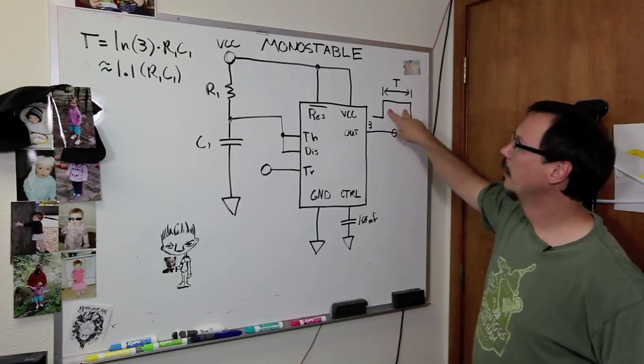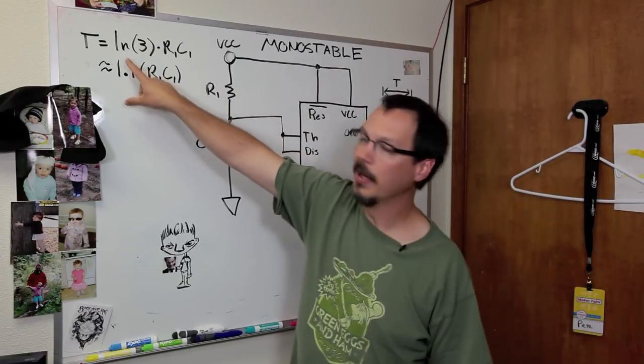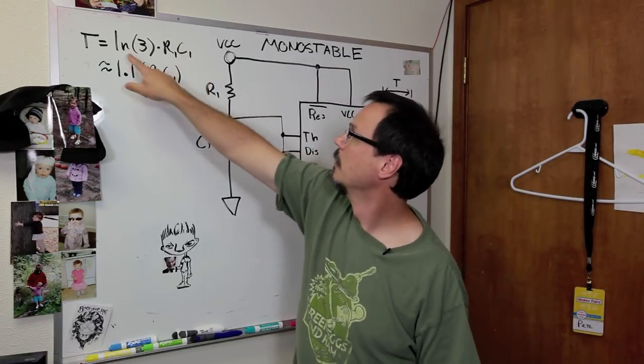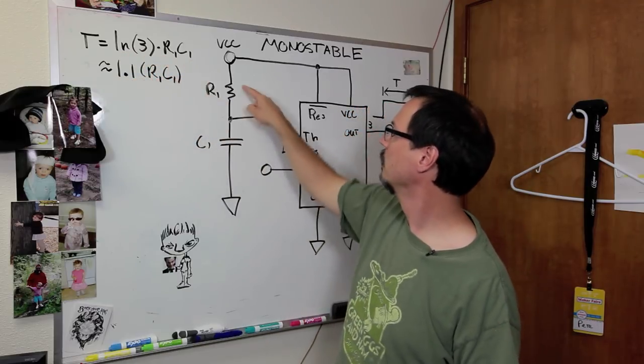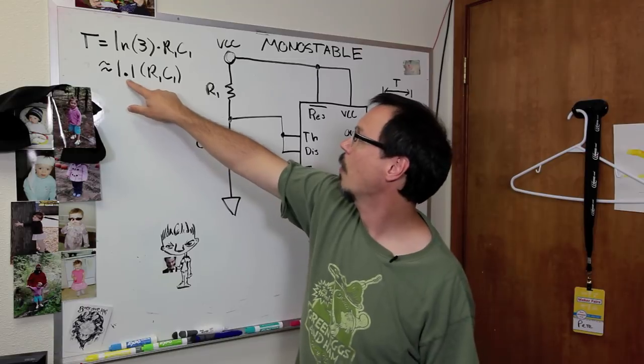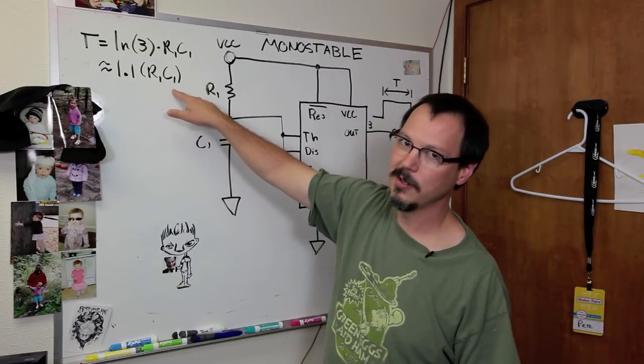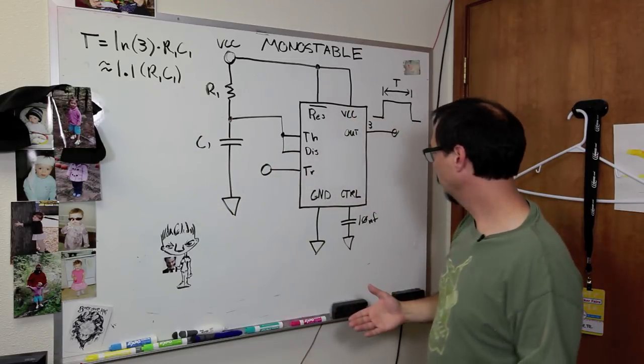This period, T, can be determined by these equations. So, T equals natural log of three times R1, C1. Or, you can approximate it as 1.1 times R1, C1, okay? Simple enough.